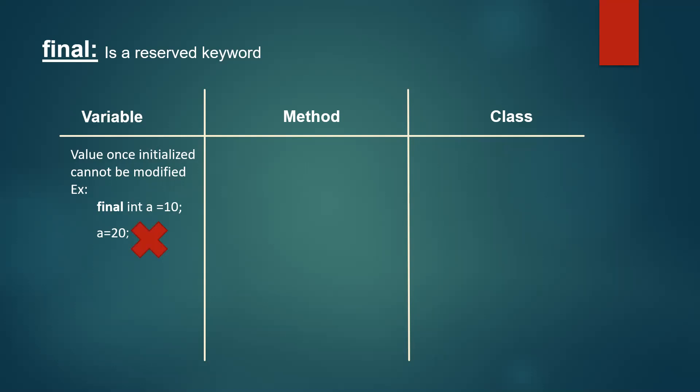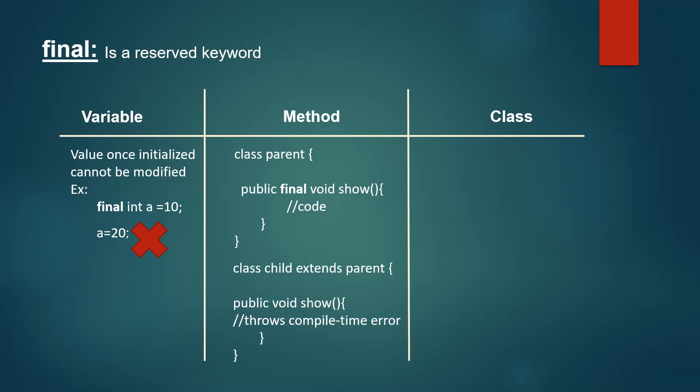Next, let us understand a final method. For example, we have a class and inside it we have a method called show which is final. The keyword final is used just before the return type and after the access modifier. We have a child class which extends the parent class, but we can't override the final method. Trying to override the show method throws a compile time error — a final method cannot be overridden.